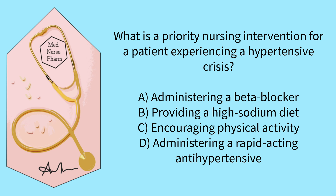A is incorrect. Beta blockers may be used, but in a hypertensive crisis the priority is to administer a rapid acting anti-hypertensive for immediate blood pressure reduction. B is incorrect. A high sodium diet is contraindicated in a hypertensive crisis as it may worsen fluid retention and increase blood pressure. C is incorrect. Physical activity is generally contraindicated in a hypertensive crisis; the focus is on reducing blood pressure first. D is correct. A hypertensive crisis requires prompt reduction of blood pressure to prevent organ damage, and rapid acting anti-hypertensive medications are used for this purpose.